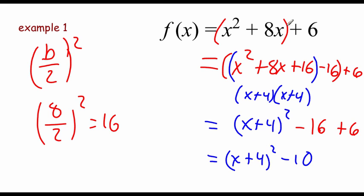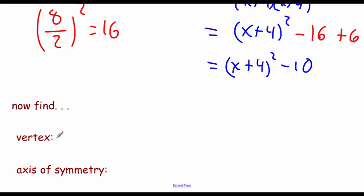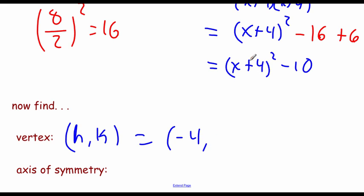We took that quadratic equation at the very beginning and did this adding zero, completing the square process to rewrite it as x plus 4 squared minus 10 — this is a quadratic in standard form. For the vertex, we look at those h and k values. The h value is what's being subtracted from x; since we see plus 4, we do a sign change so h is negative 4. The k value stays exactly the same as negative 10, so the vertex is at negative 4, negative 10. The axis of symmetry is x equals negative 4.